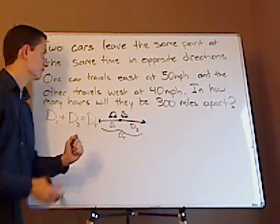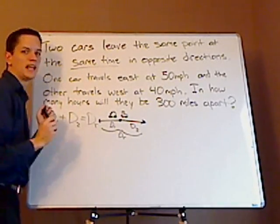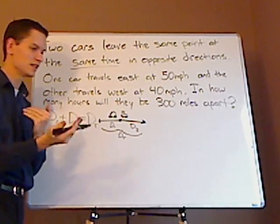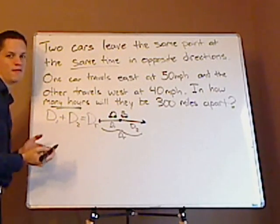Now the times are going to be the same. How do I know that? Because it tells me same time. So I can use T for each of those and plus on top of that I'm looking for hours. So that's my variable.